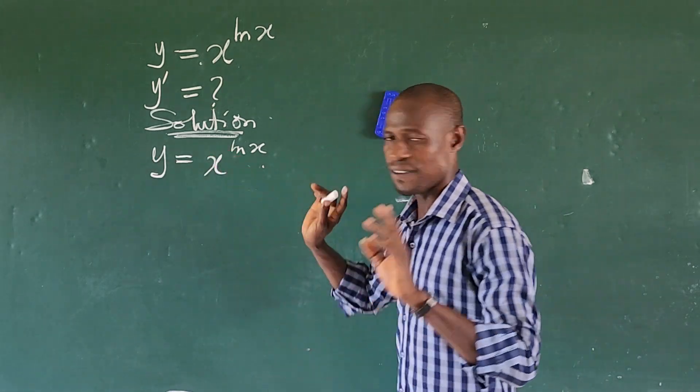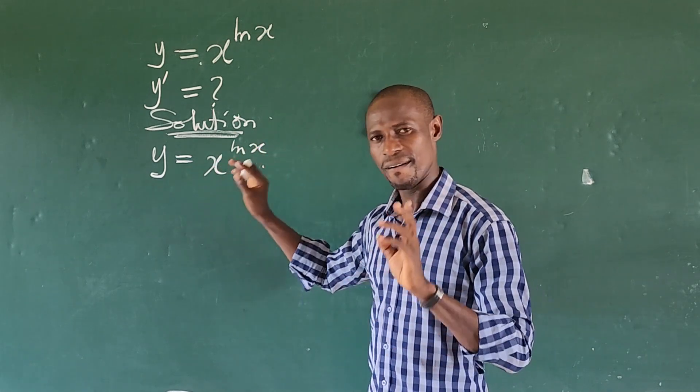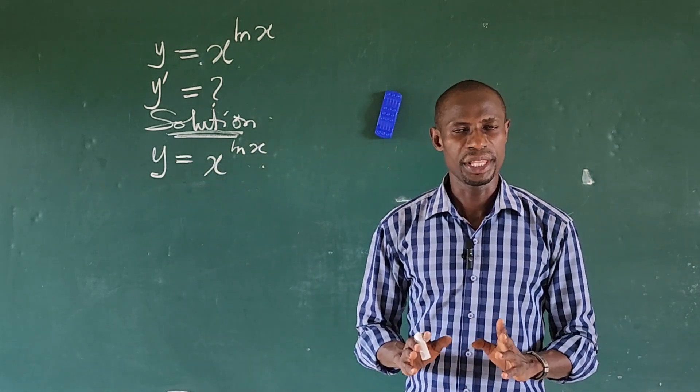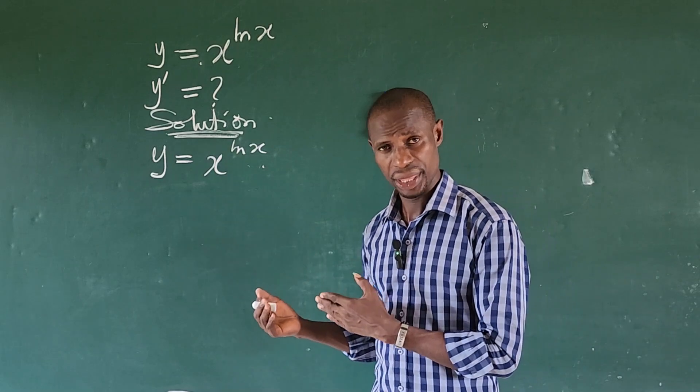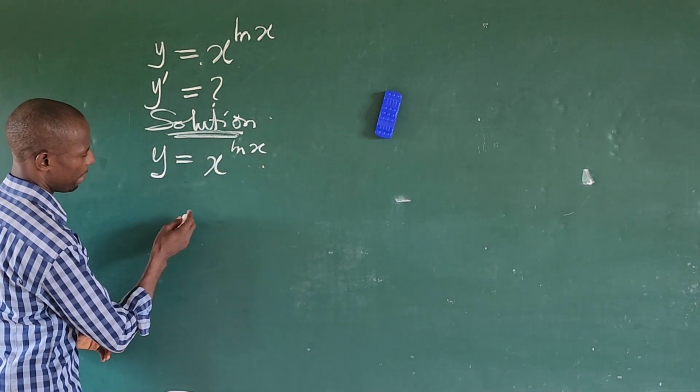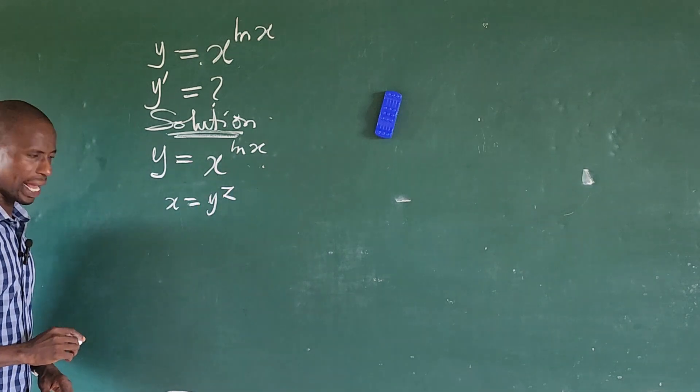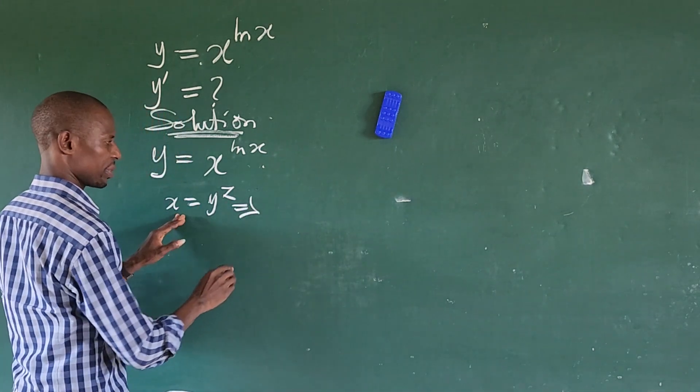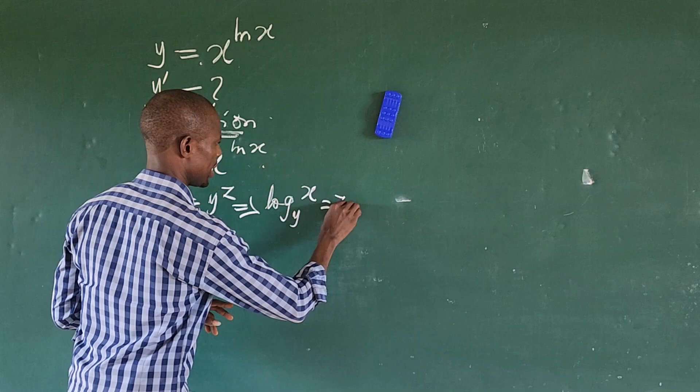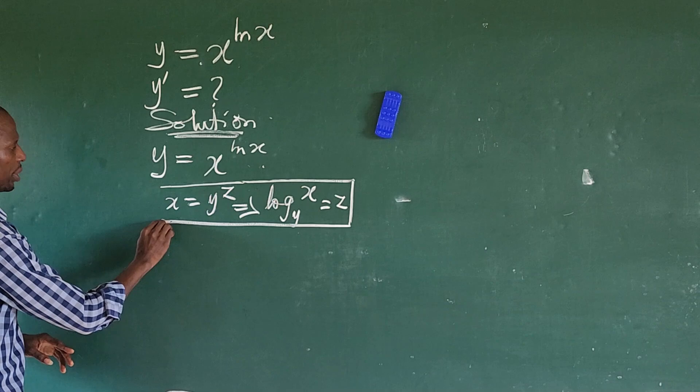This is in the form of indices. From the law of logarithmic, we have a strong relationship between logarithmic and indices. The relationship is that, for instance, if you have x equal to y to the power of z, this can be written in logarithmic form as log x base y equals z.